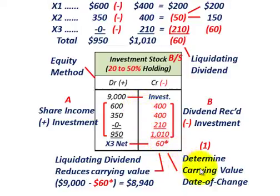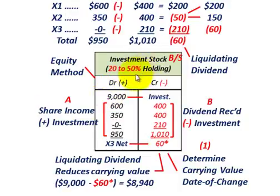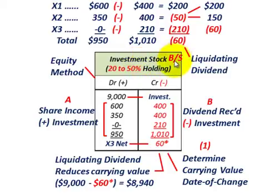The key is you have to determine the carrying value at the date of the change. Under the equity method, you have your investment in stock account, starting with whatever the initial investment was — in this case $9,000,000. The investment account increases for the share of income that Corporation B earns each year, and it's reduced by any dividends received. Any share of income increases the investment account; any dividends received reduce it.